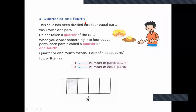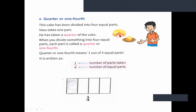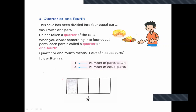Next, quarter or one fourth. Quarter or one fourth means — see here, this is a cake. This cake is divided into four equal parts. Vasa takes one part. He has taken a quarter of the cake. When you divide something into four equal parts, each part is called as quarter. When you divide a whole into four equal parts, each part is called as quarter or one fourth. All parts should be equally divided — that is important.